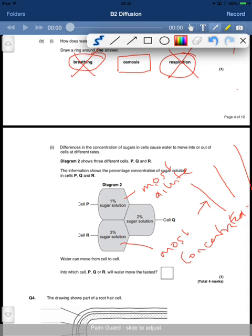And in osmosis, water moves from an area of high water concentration to low water concentration. It's effectively diffusion for water. So the water will be moving into the most concentrated because it has the least water. So water will be moving into cell R the fastest.